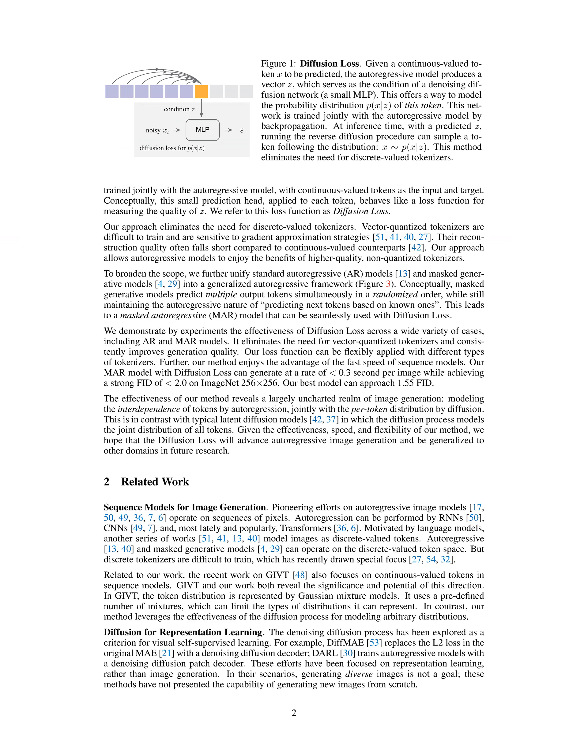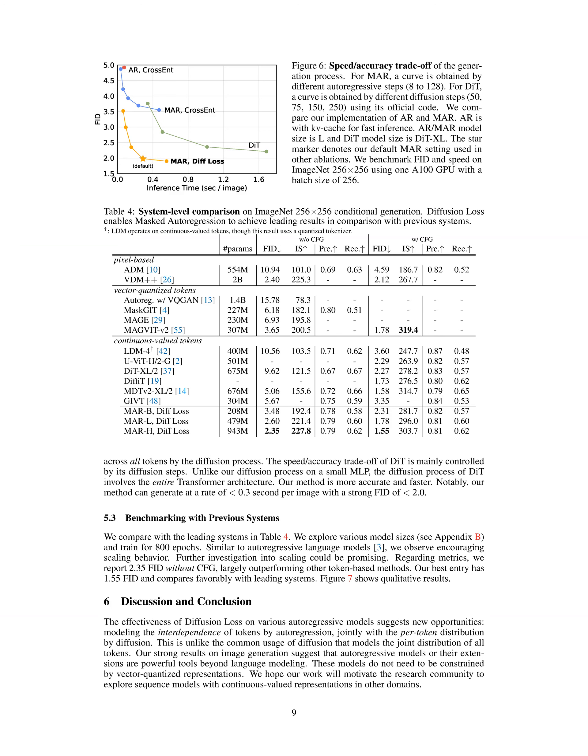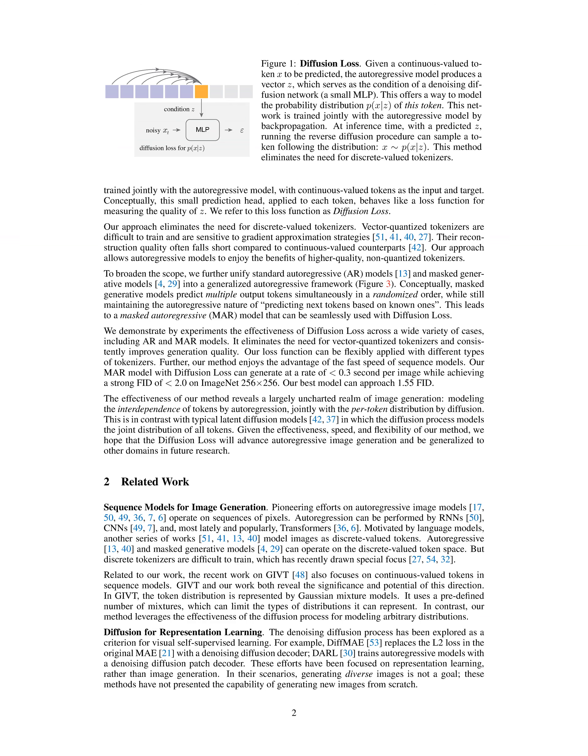The diffusion loss can be applied with different types of tokenizers, showcasing its versatility and adaptability in various scenarios. Furthermore, the use of continuous-valued tokenizers and diffusion loss in autoregressive models allows for faster generation rates, with the ability to generate images in less than 0.3 seconds per image while maintaining a strong FID score of less than 2.0 on ImageNet 256x256. Overall, the combination offers improved generation quality, faster speed, flexibility in distribution modeling, and elimination of the limitations associated with vector quantized tokenizers.